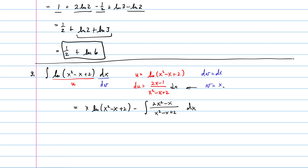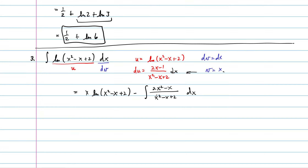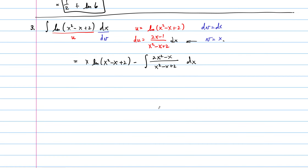By integration by parts, the antiderivative becomes x·ln(x squared minus x plus 2) minus the integral of x·(2x minus 1) over (x squared minus x plus 2) dx. Note that x squared minus x plus 2 is irreducible — it cannot be factored — so for this remaining integral we need to perform long division.